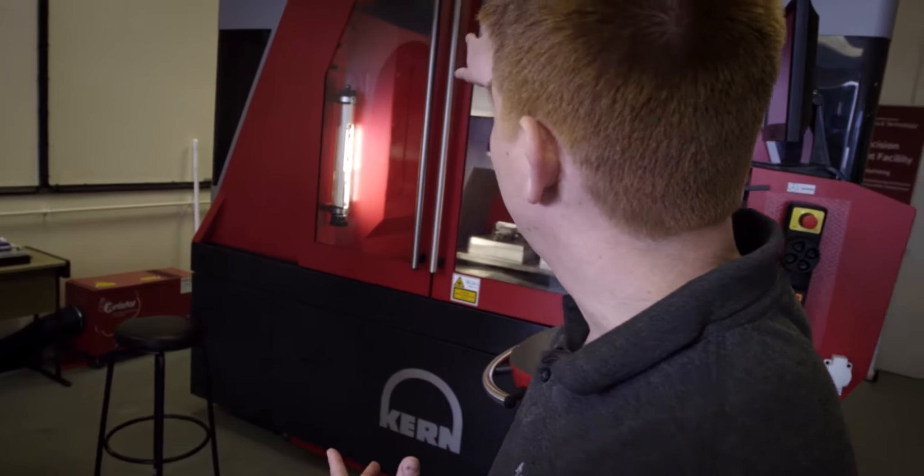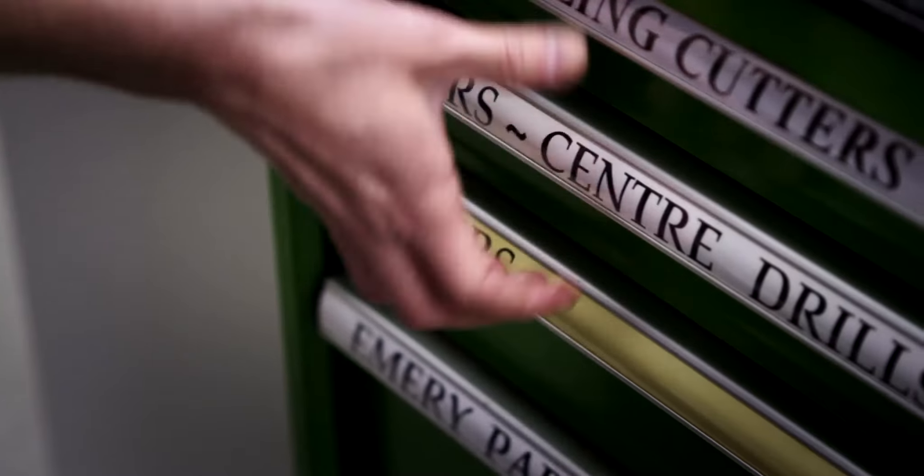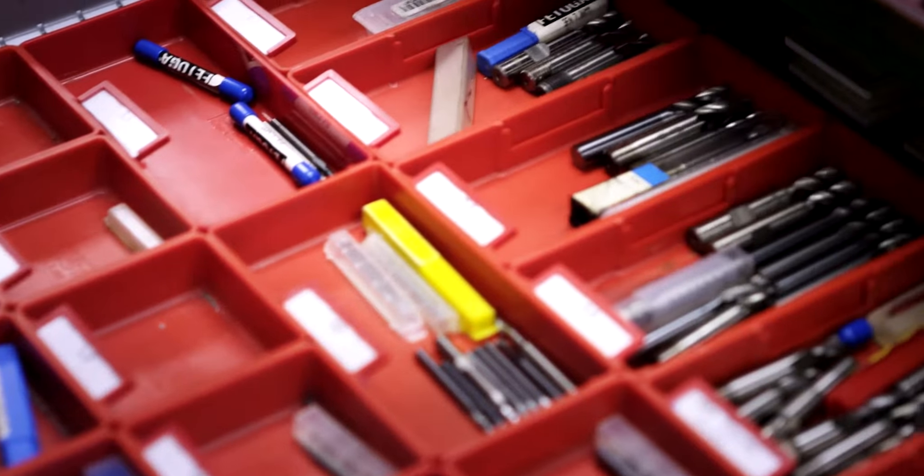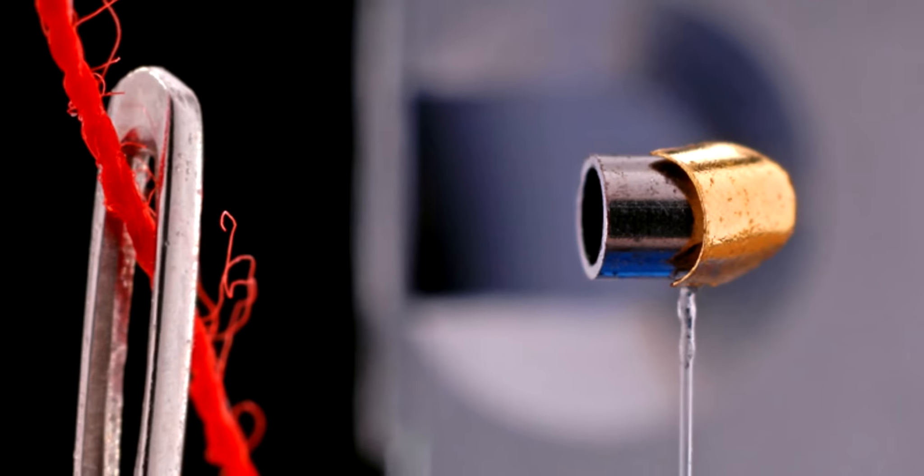This is a flagship model Kern Pyramid Nano. There's only four of these in the UK, very accurate machine. We use cutters as small as a hair on this machine to be able to drill holes and machine some of the complex features on some of the devices we're involved in making.